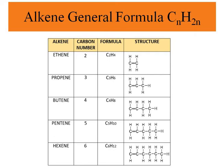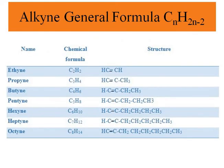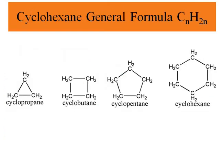For alkynes, the general formula is CₙH₂ₙ₋₂. As shown, the structure, name, and chemical formula for alkynes include ethyne, propyne, butyne, and so on — for example C₂H₂, C₃H₄, C₄H₆, and so on.